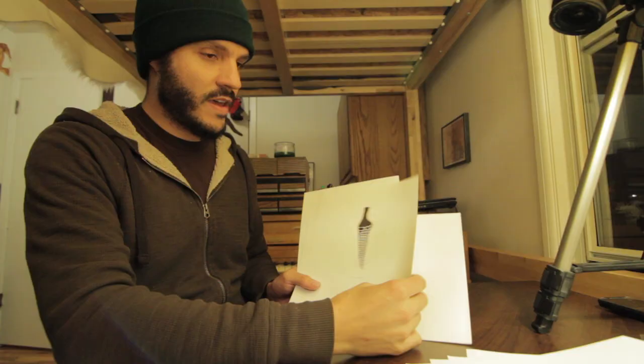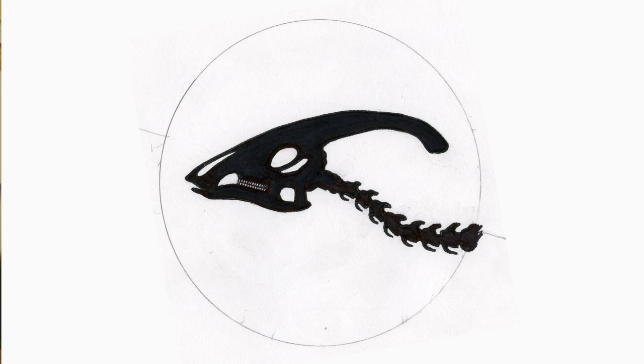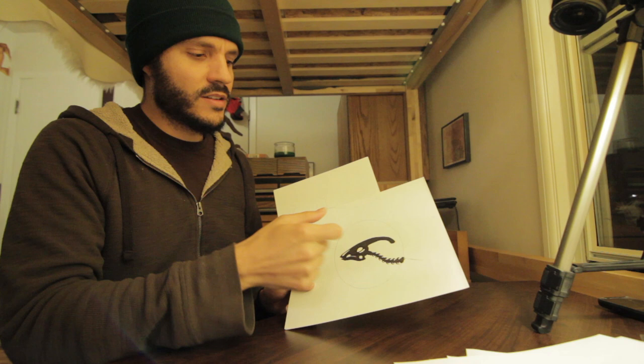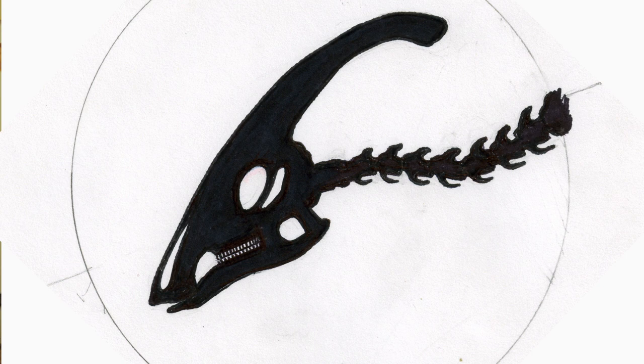We've got Parasaurolophus. This one was hard to get to fit in the circle and still kind of go along with the star point shape, but I made it work. Got the crest here, noise-making device in theory.